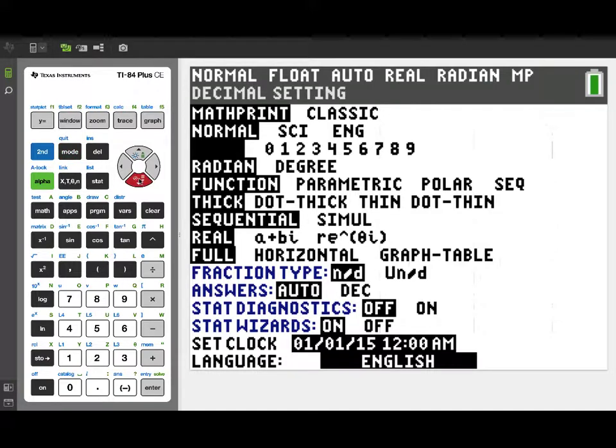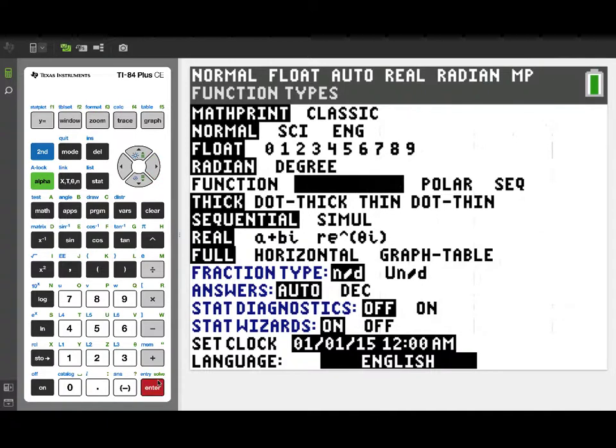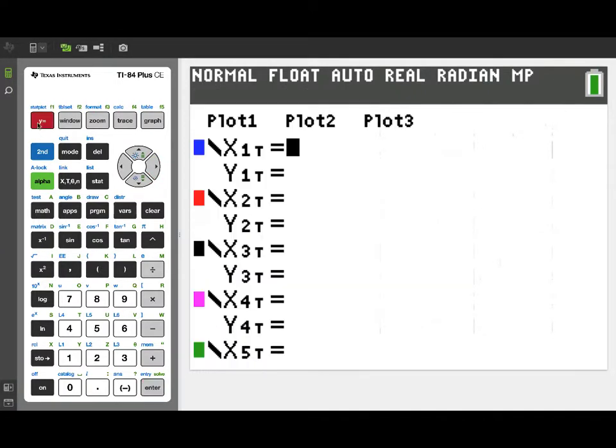First thing we need to do is change our mode to parametric. So we've gone to the mode settings and changed from function to parametric. And we'll go to the Y equals menu, and we're set up for our parametric entries.